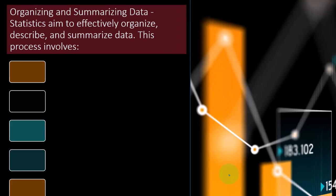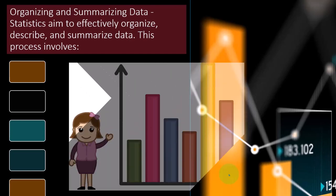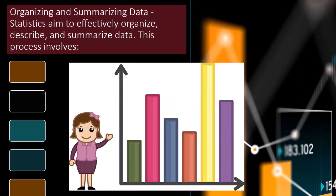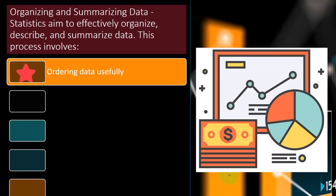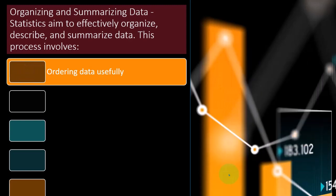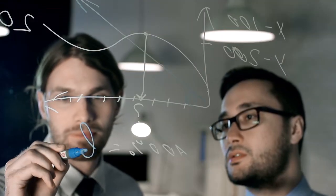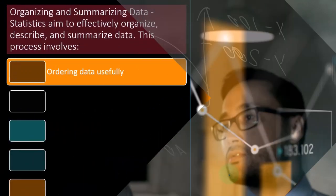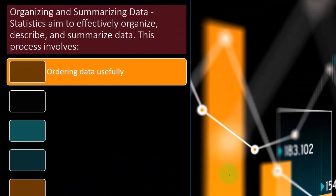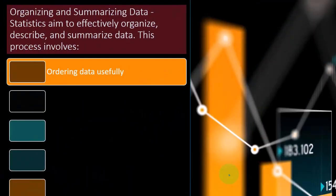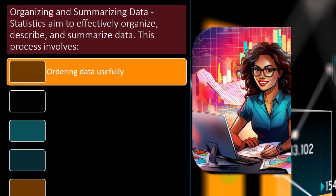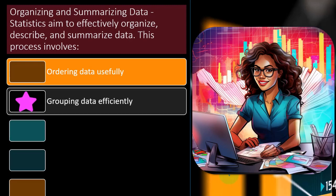So organizing and summarizing data. Statistics aim to effectively organize, describe and summarize data. So obviously that's the point of statistics. We want to take this wealth of data, put it into an organized fashion so that we can glean information from it. This process involves ordering data usefully. In other words, if we just take a look at a data set, if we just measure things every hour or something like that, or every day, the data set might be ordered by day, but that's not usually going to be the most useful formatting of the data. One of the things we might do is try to sort the data from lowest to highest results of whatever the data is. That's something that we can easily do in something like Excel. That's why Excel is going to be quite useful for these tools.